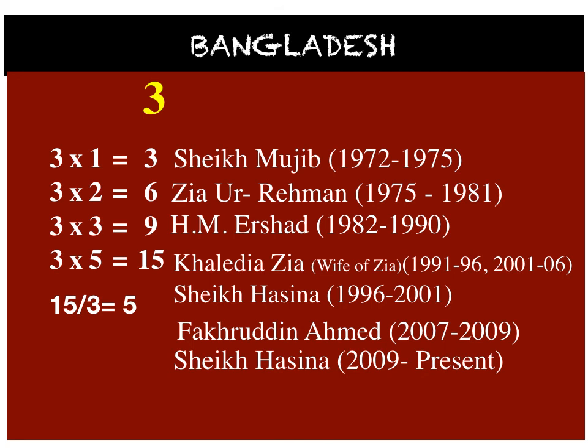Fakruddin's year may not be critical since his was a caretaker government. However, if you want to remember it, note that there were 2 ladies before him, so he ruled 1 year for each of them — making 2 years. Finally, you definitely need to remember the date for Sheikh Hasina's tenure. Watch this clip a couple of times to remember the different regimes.